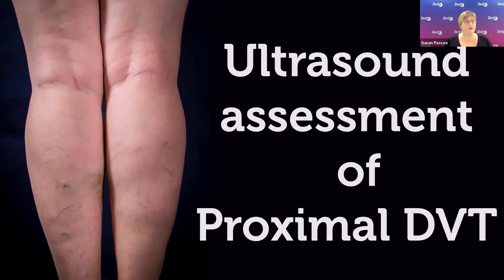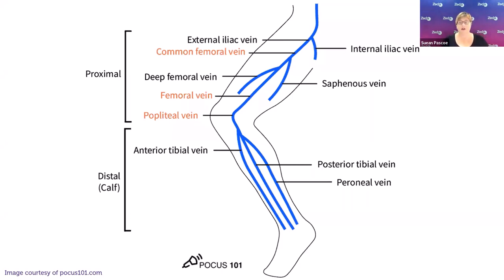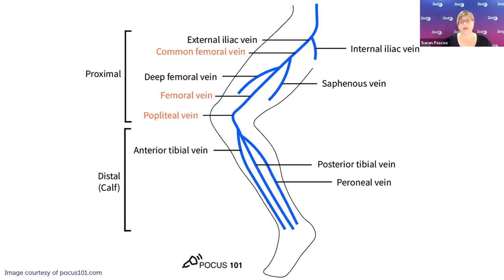We'll start by refreshing the anatomy. Deep veins are always paired with an artery, so make sure you can see the relevant artery to know you're in the deep system. The superficial veins hang out on their own. The common femoral vein can be identified proximal to the saphenofemoral junction — that junction is a useful landmark. Above the saphenofemoral junction is the common femoral vein; below it is the femoral vein.